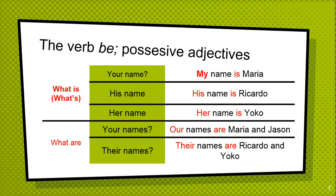What are your names? Our names are Maria and Johnson. What are their names? Their names are Ricardo and Yoko. This is a plural, not singular. If you use 'is', that is singular.